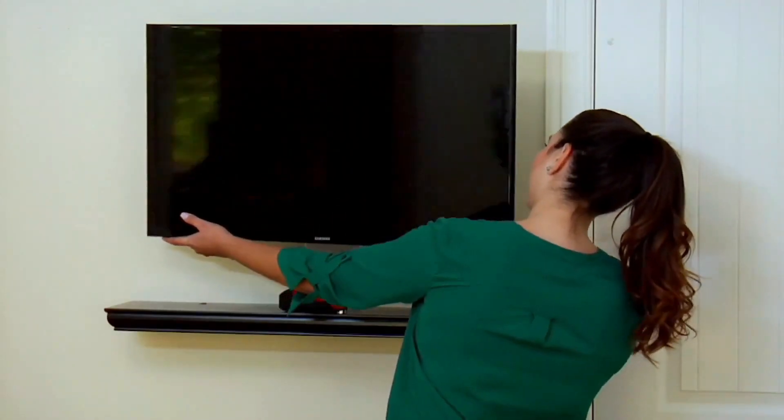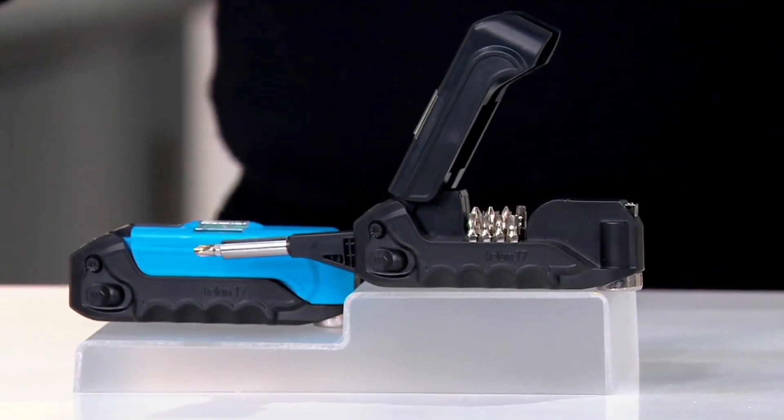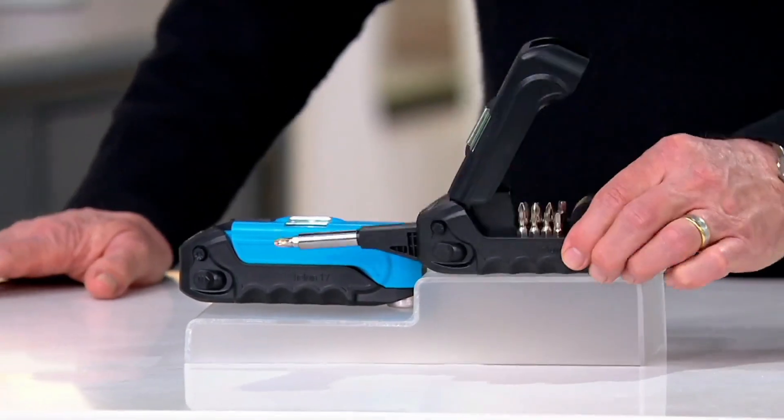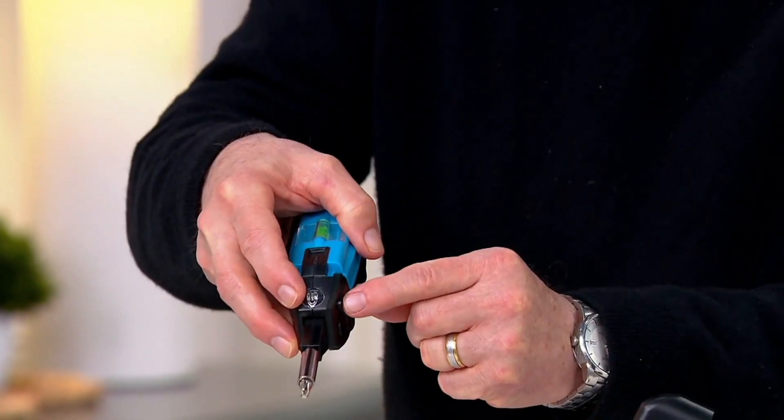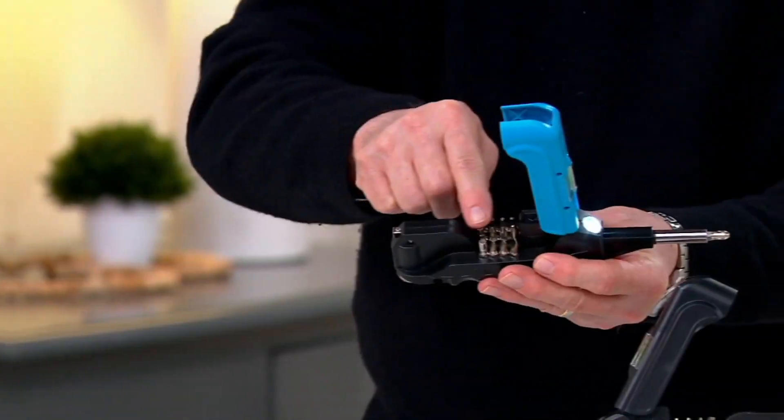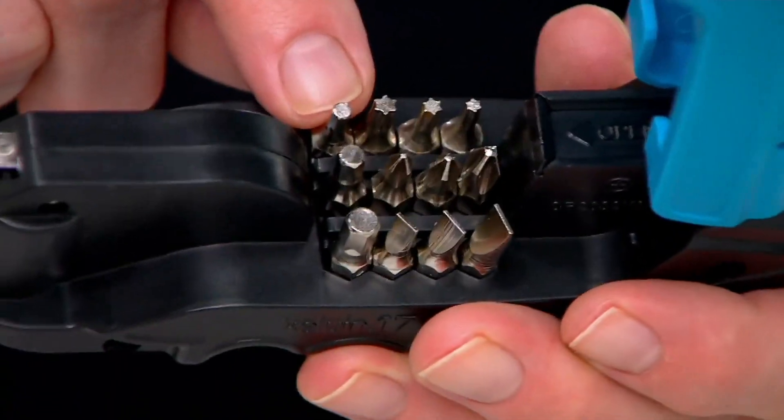It features 13 integrated screwdriver bits that snap seamlessly onto the built-in screwdriver, alongside a 1-meter tape measure, a spirit level, an LED light, and a steel hammer. The best part is that all of it slots neatly together, so you can just grab it and go.